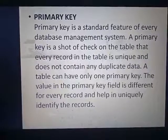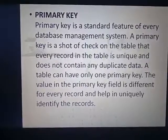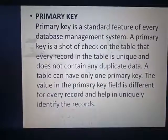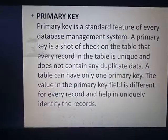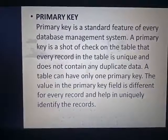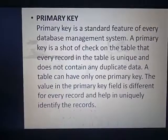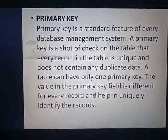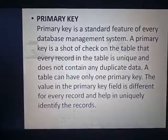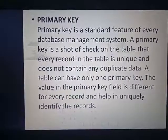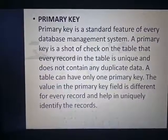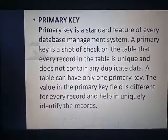Primary key. A primary key is one of the most important parts of MS Access. It is a standard feature of every database management system. A primary key is a check on the table that every record in a table is unique and does not contain any duplicate data. It reduces duplicacy. A table can have only one primary key.